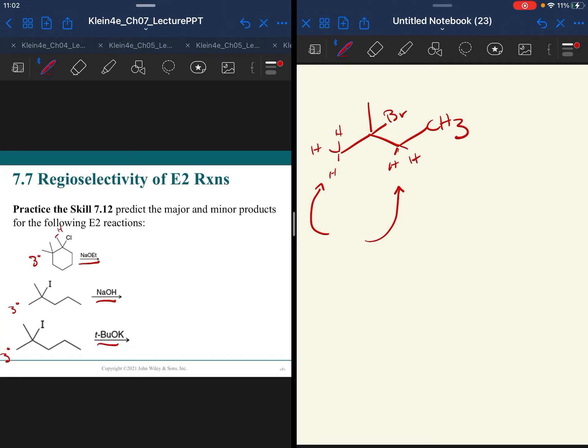Now, in this case, you also only have hydrogens here and here. So we have to decide, is it going to make the more substituted product or less? Sodium ethoxide is a small base. So we are going to make the more stable Zaitsev product.